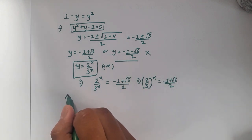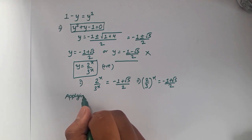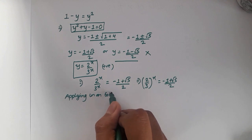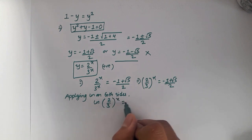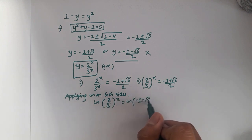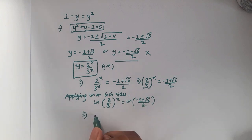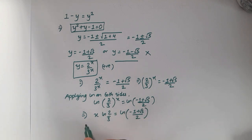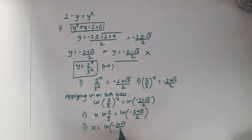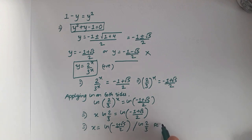Now let's apply log on both sides. Applying log on both sides, we will have log of 2 over 3, power x, equals log of minus 1 plus root 5 over 2. This can be written as x times log 2 over 3, equals log of minus 1 plus root 5 over 2. So from here we can get x equals log of minus 1 plus root 5 over 2, divided by log of 2 over 3. And this is approximately equal to 1.186, and that's our answer.